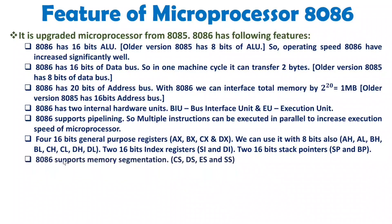8086 supports memory segmentation. The complete 1 MB memory of 8086 can be segmented into four different segments: code segment, data segment, extra segment, and stack segment. That feature was not available with 8085. With each segment we can interface 64 KB of memory. Memory segmentation is a very essential feature and will be covered in detail in a separate video.